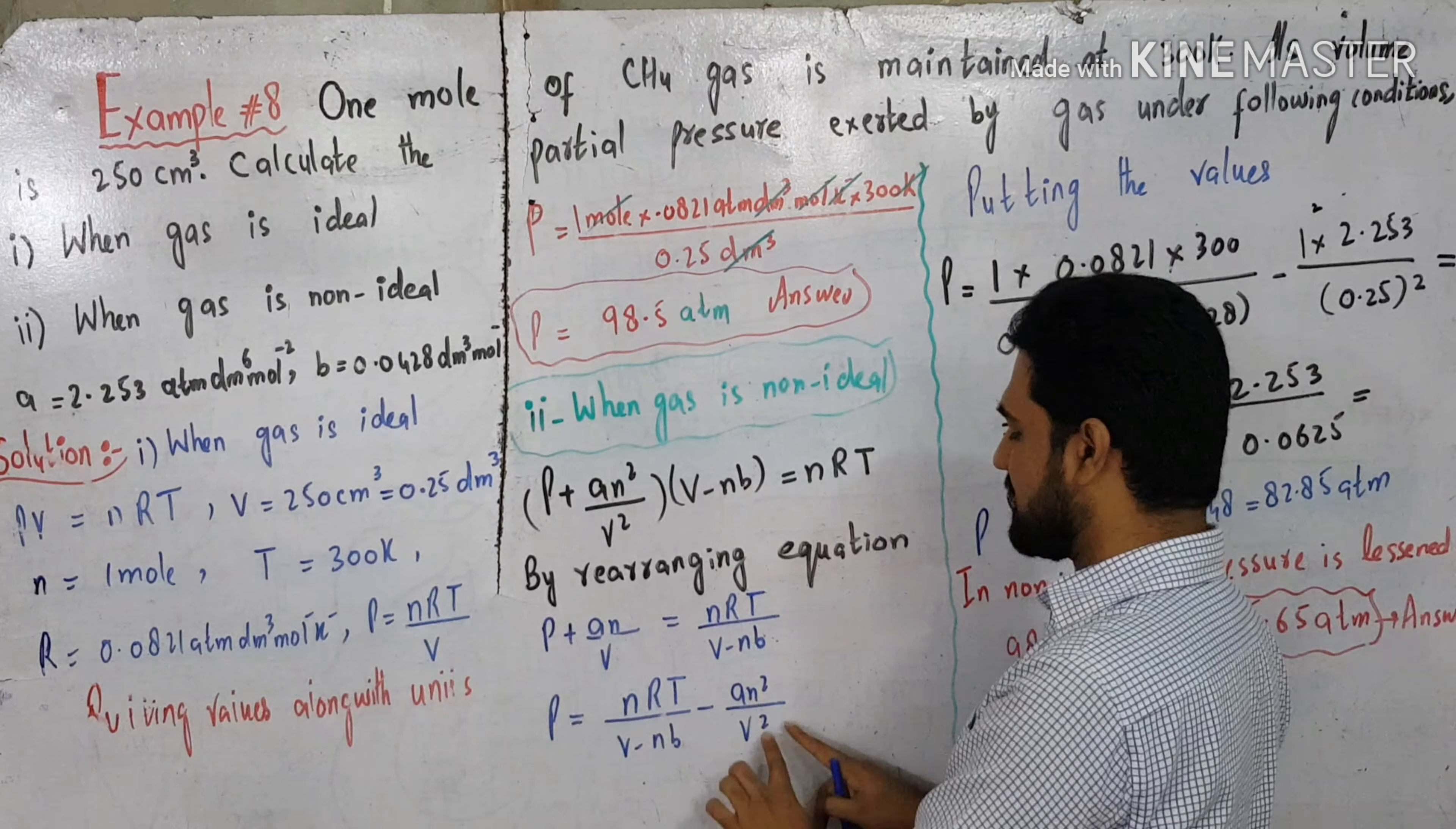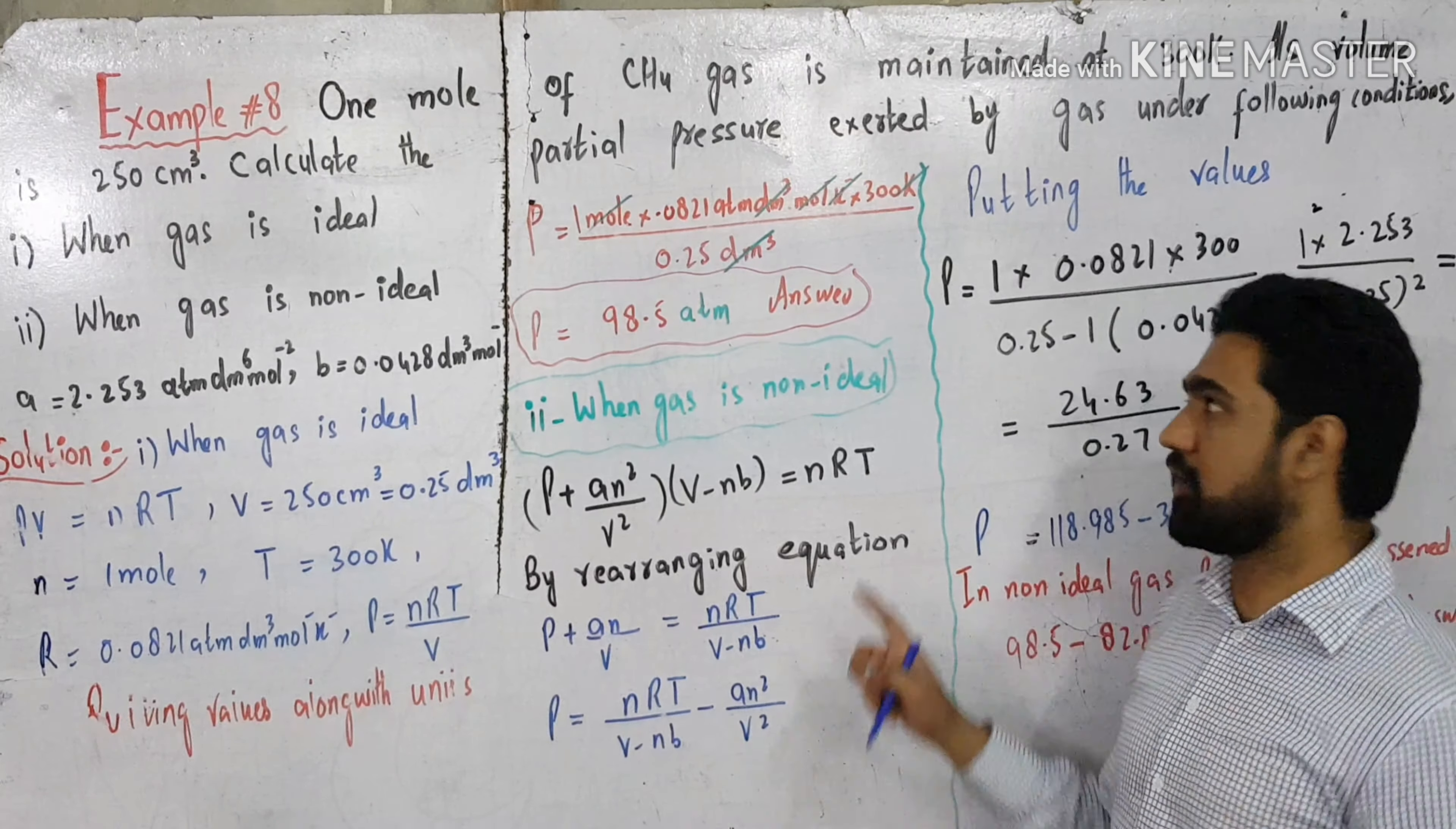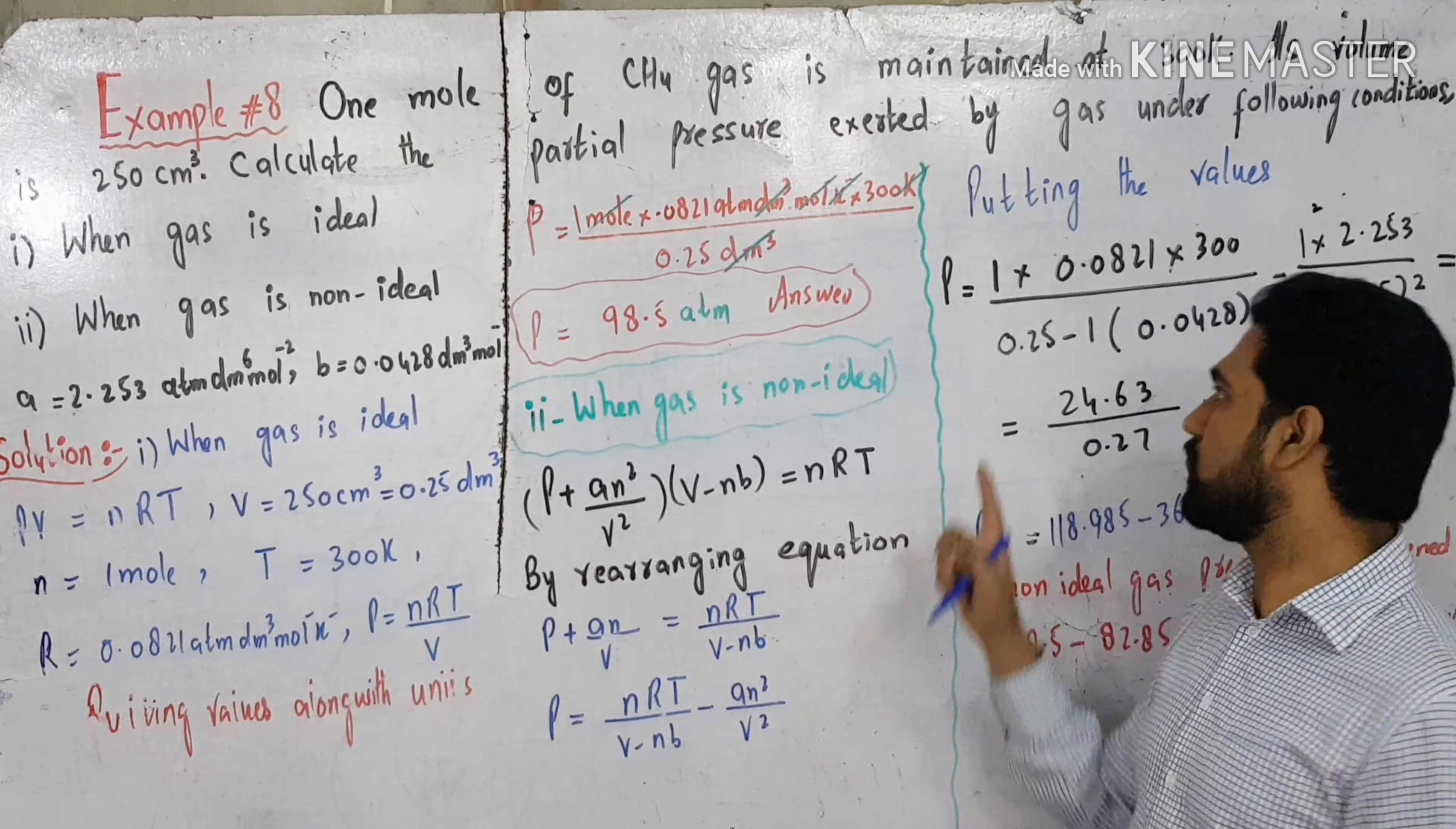P equals nRT over (V - nB) minus n²A over V². Now put values with units.